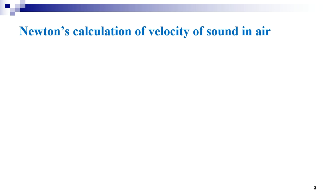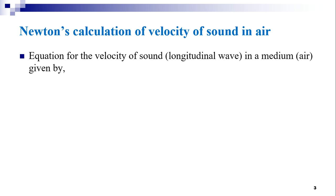In the previous session, we discussed and deduced an expression for the velocity of sound in a medium, which is the velocity of a longitudinal wave in a medium — the medium may be air. This was also called Newton's formula for sound propagating in a medium, given by V = √(E/ρ), where E is the volume elasticity of the medium and ρ is the density. This is known as Newton's formula for the velocity of a plane longitudinal wave in an elastic medium.